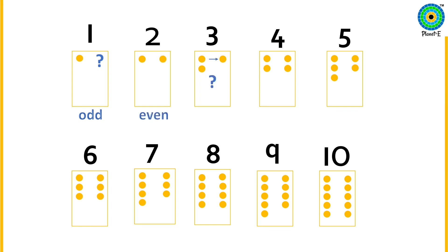Number three. Let's check if each dot has a friend. Oh, there is one dot which does not have a companion. Three is an odd number.